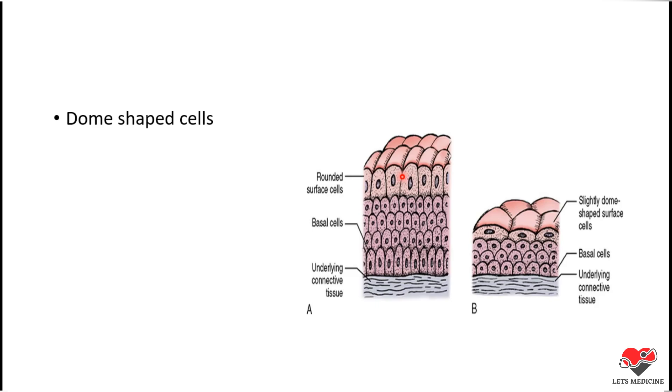However, when the organ is in a stretched state or non-relaxed position, then these dome-shaped cells become flattened. So the difference in the shape of epithelial cells is most prominent in this uppermost layer or in the dome-shaped cells of Transitional Epithelium.